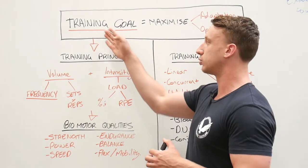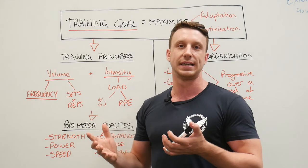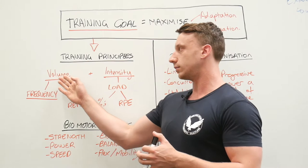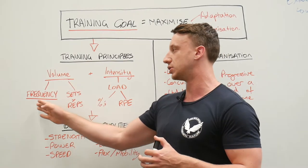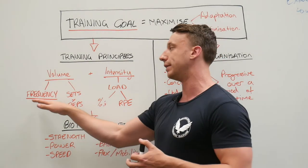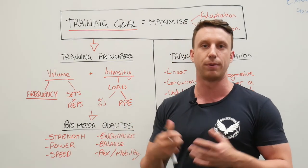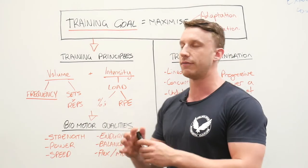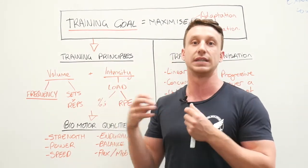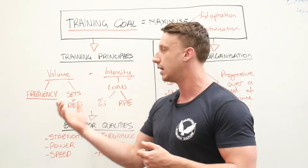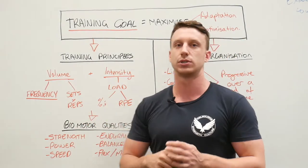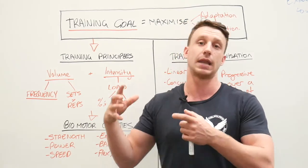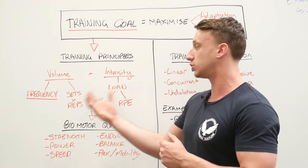Before we go into the organization of training, we need to look at the underlying principles of a training program and how you can manipulate those to get a desired result. Under training principles, the two biggest players in all training programs are volume and intensity. Volume is broken into two subcategories: frequency — how often you're actually performing a lift, body part, or split — and sets times reps, which is the amount of actual work you're doing per body part, movement, or muscle group.